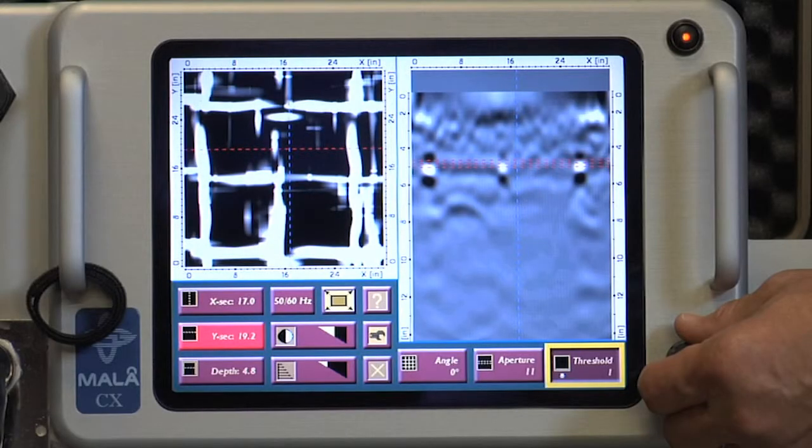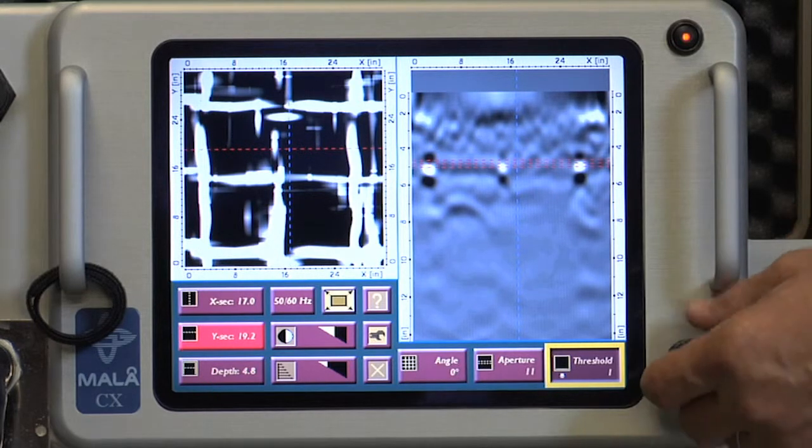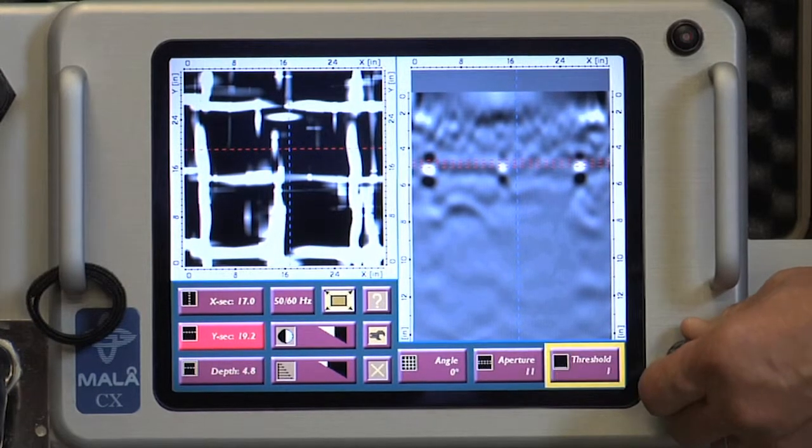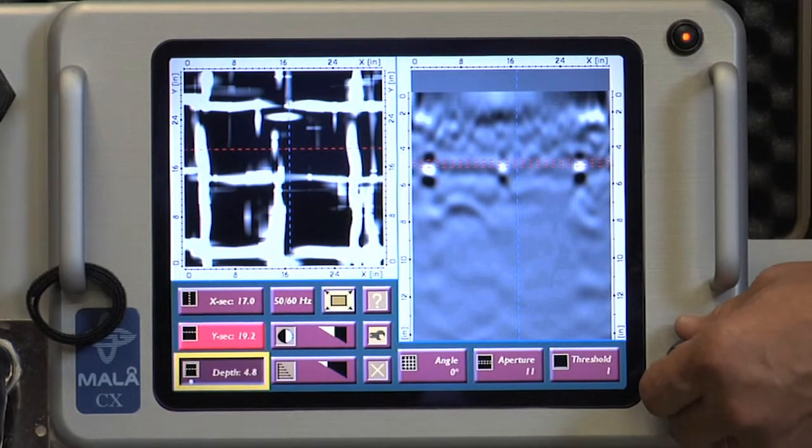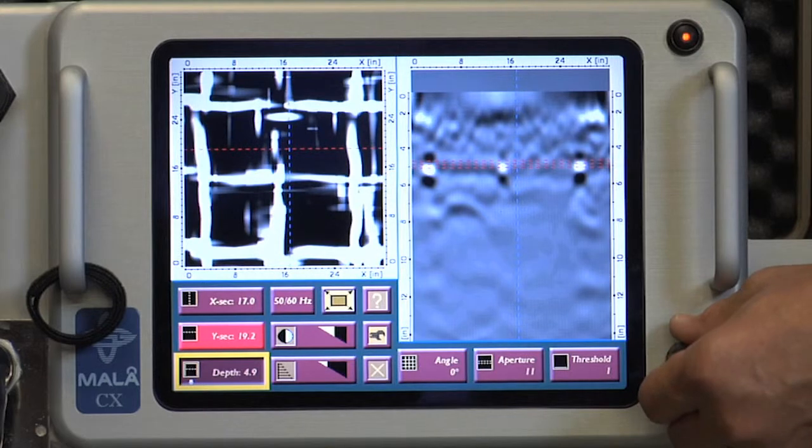Threshold is useful for suppressing unwanted low-amplitude background noise from the data. Increasing the value may sharpen the desirable target, such as rebar, while suppressing weaker reflections and, in ideal circumstances, will render only the rebar in the image.